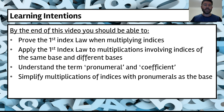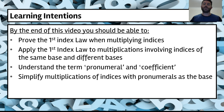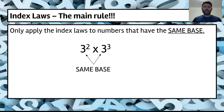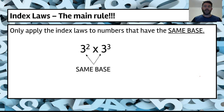We want to understand some terms in mathematics — pronumeral and coefficient — and we want to simplify multiplications of indices with pronumerals as the base. One of the main rules as we go through this is that we only apply the index laws to numbers that have the same base.